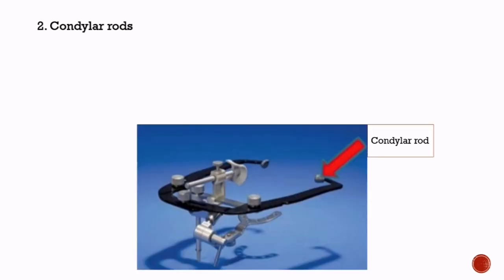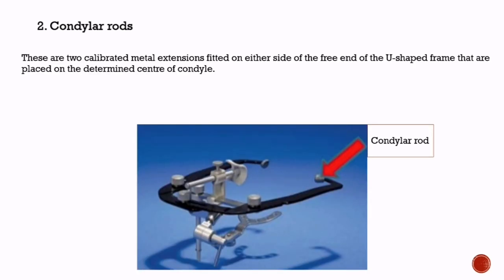Second is condylar rods. These are two calibrated metal extensions fitted on either side of the free end of the U-shaped frame that are placed on the determined center of the condyle. The calibrations on either side are equalized and then locked.